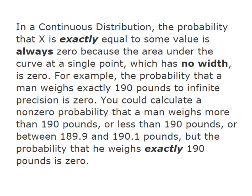I cannot solve for the probability that X equals 190 pounds. Instead, I could calculate the probability that he weighs more than 190 pounds or less than 190 pounds. I could even construct an interval and find the probability that he weighs between 189.9 and 190.1 pounds. But the probability that he weighs exactly 190 is always zero. This is very important for your understanding of how the cumulative distribution function in Minitab operates.